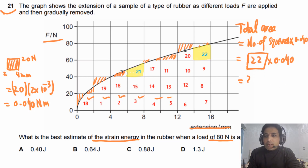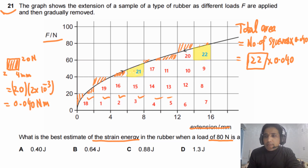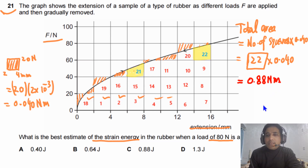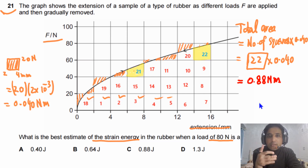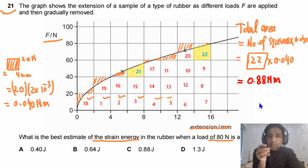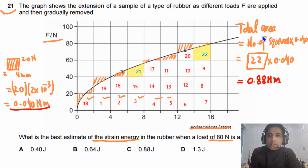We have 22 squares. Multiplying: 22 times 0.040 gives a final answer of approximately 0.88 Newton meters. Wait — the final answer is 4.88 Newton meters. This counting-squares technique is important for A level, AS level, and IGCSE level. The answer for this question is C.